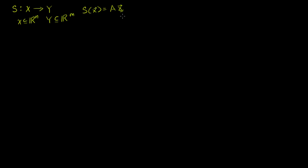Since x is a member of Rⁿ, it's going to have n components, so matrix A has to have n columns. Matrix A is therefore going to be an m by n matrix.